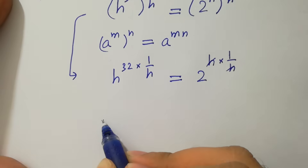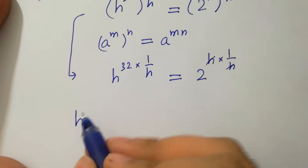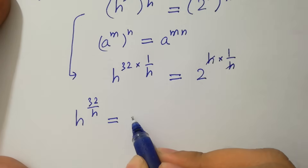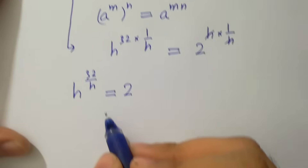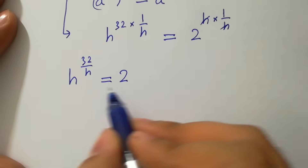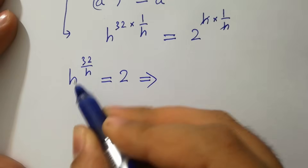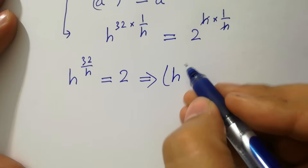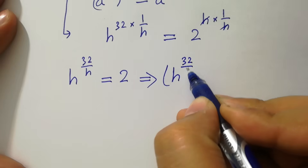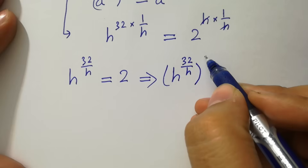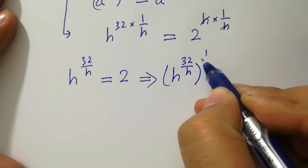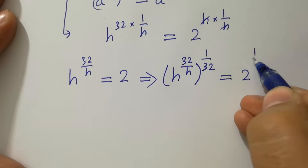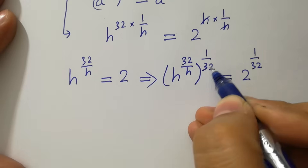We have h to the power 32 over h equal to 2. In the next step, take power 1 over 32 on both sides: h to the power 32 over h, to the whole power 1 over 32, equals 2 to the power 1 over 32. The 32 cancels.